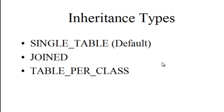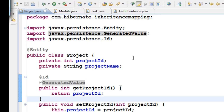For inheritance mapping there are basically three types of strategies. The first, which is the default, is called Single Table. The second is Joined, and then there is another strategy called Table Per Class. Let's look at all three strategies. The Single Table strategy is the default.